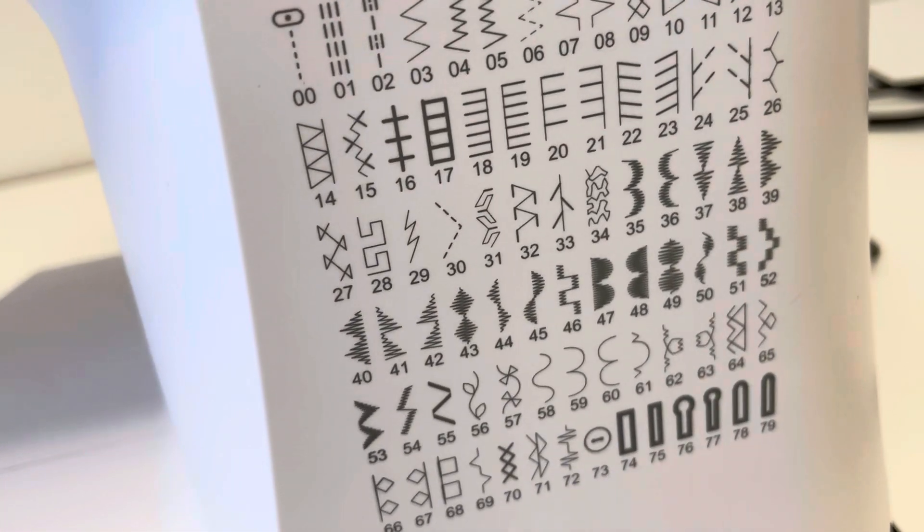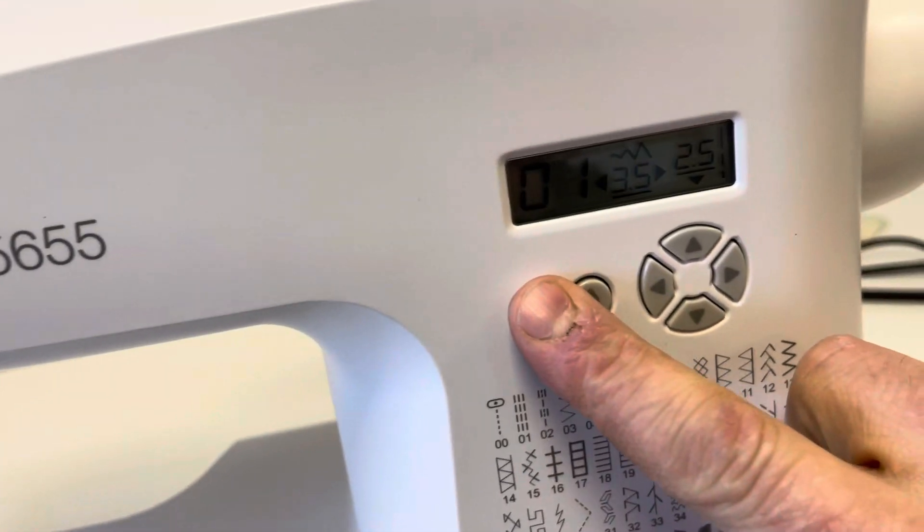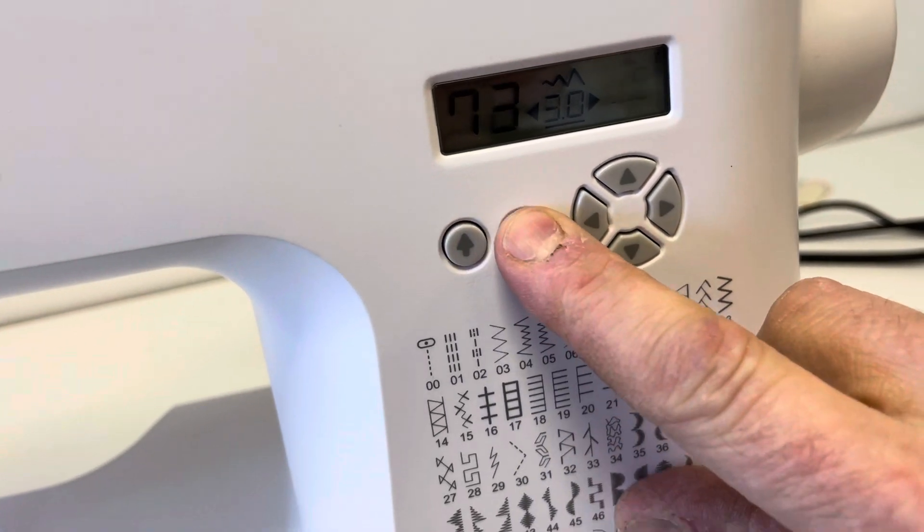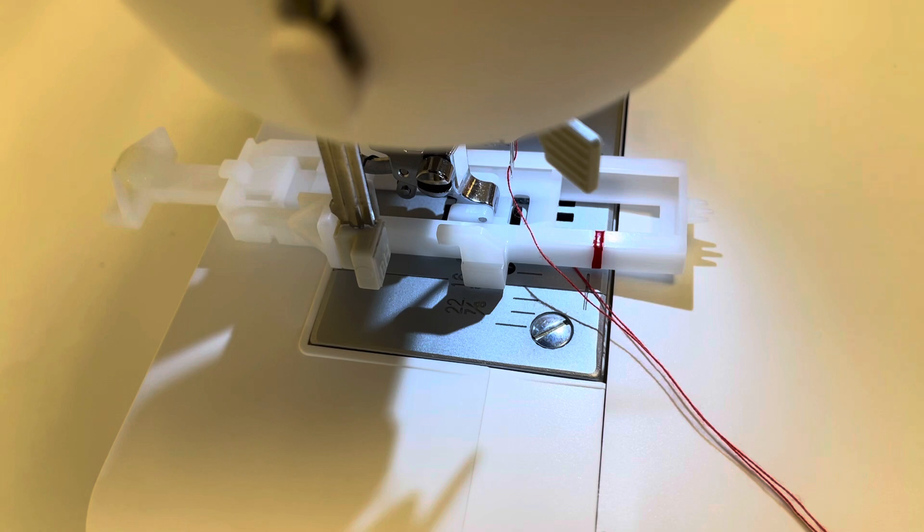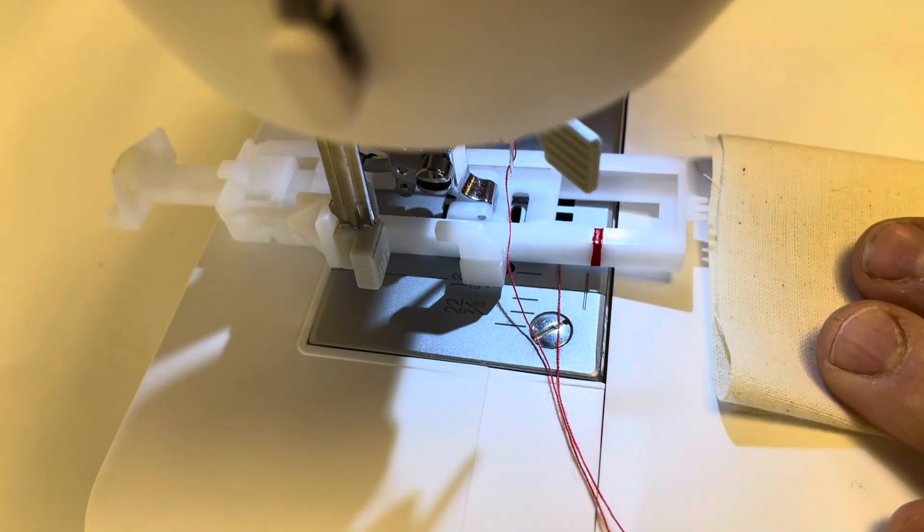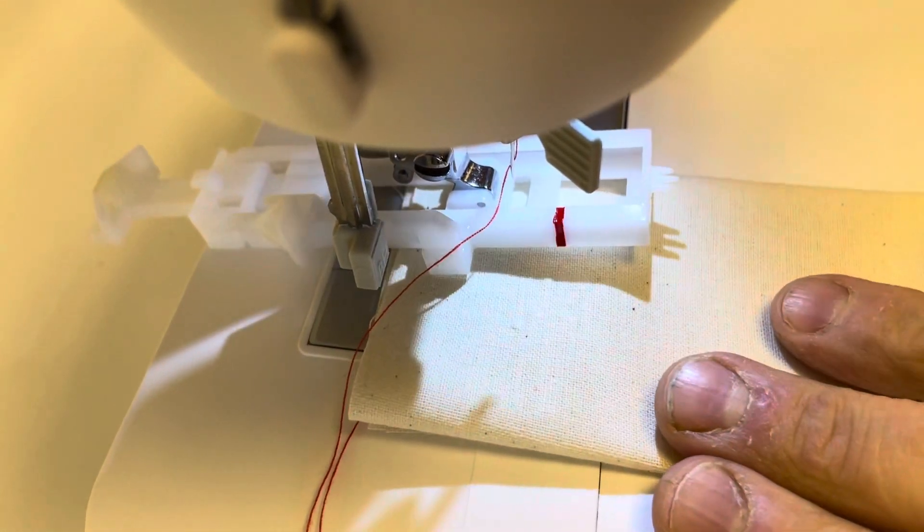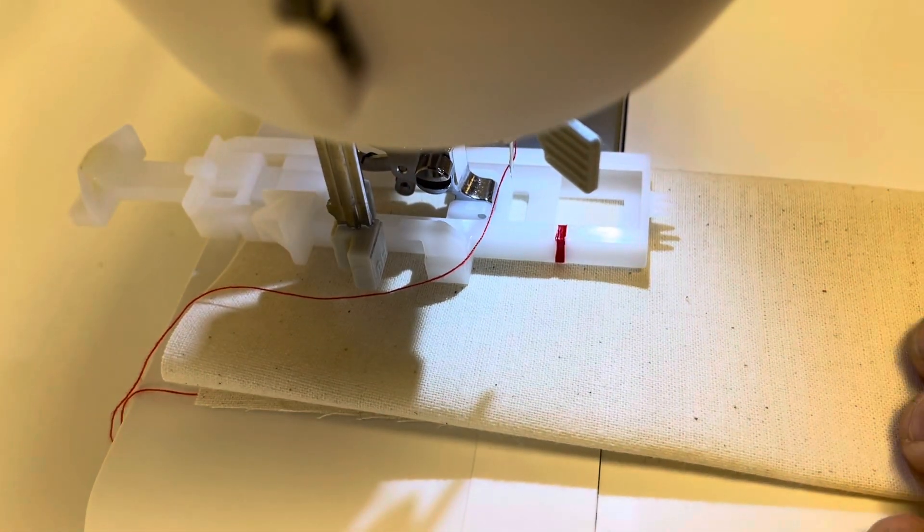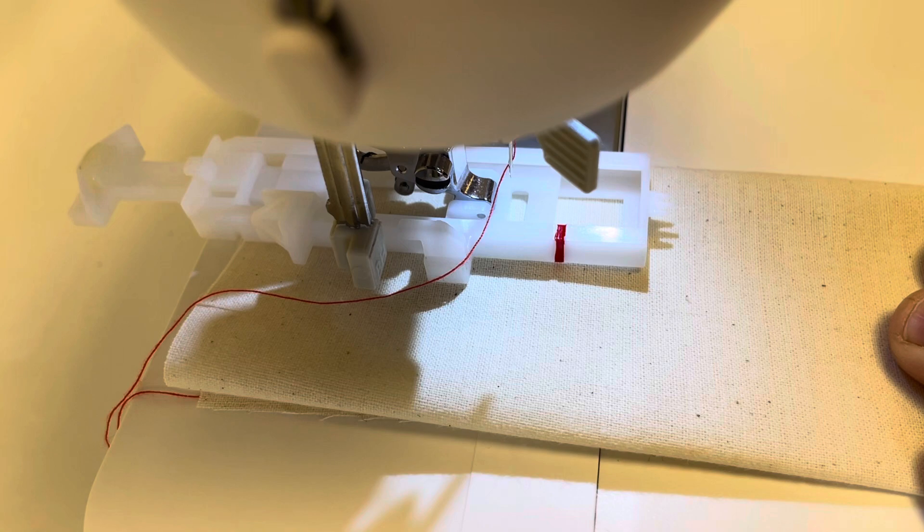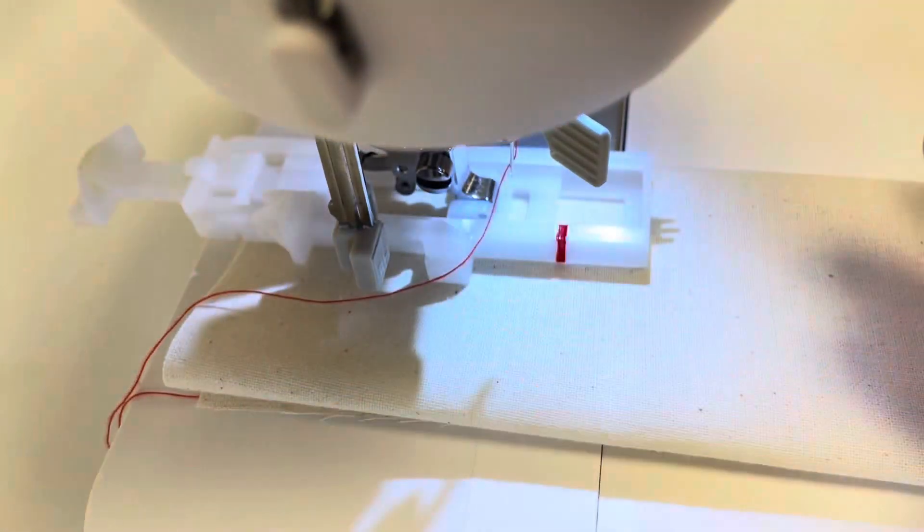So I'm going to select number 74 and then we'll get a bit of fabric and because it's automatic it does exactly what it says on the tin, it will automatically do it. So put that in just there and I'm going to press go on my foot. Make sure that's down all the way.